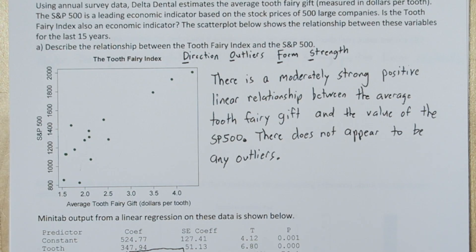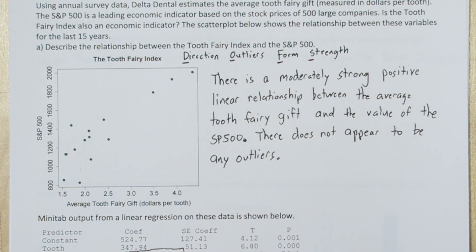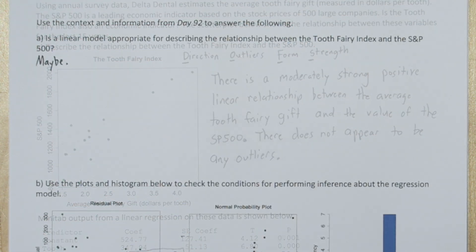If we look at the original scatter plot, we see a moderately strong positive linear relationship. So that points to a linear model being appropriate for describing the relationship between Tooth Fairy Index and the S&P 500.